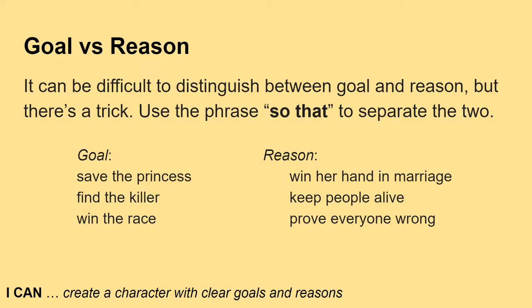When you're first getting used to goal and reason, it can be difficult to distinguish which is which. Here's a trick: use the phrase 'so that' to separate the two. If it makes sense, you probably have them in the right spot; if not, flip them and see if it makes more sense. For instance: 'Save the princess so that he can win her hand in marriage' — that works. You wouldn't say 'Win her hand in marriage so that you can save the princess.' Similarly: 'Find the killer so that we can keep people alive.' 'Win the race so that you can prove everyone wrong.' The phrase 'so that' is a great trick to figure out which is the goal and which is the reason.